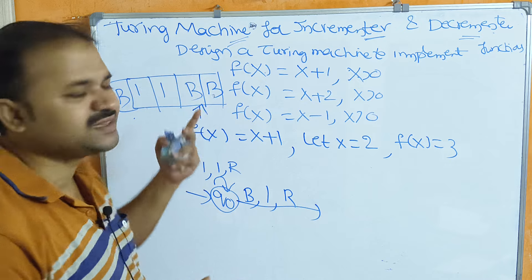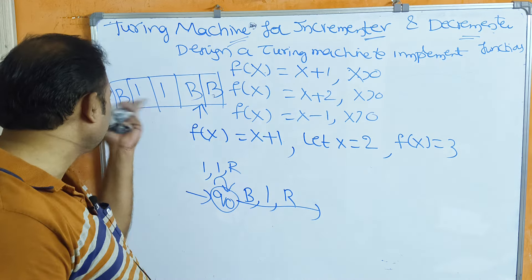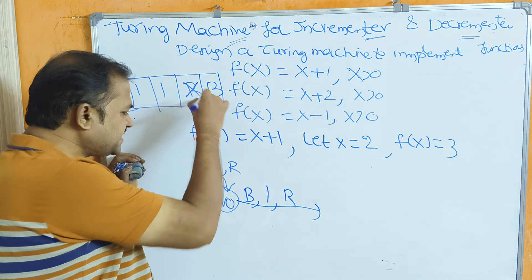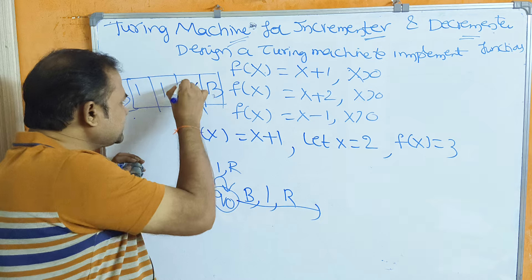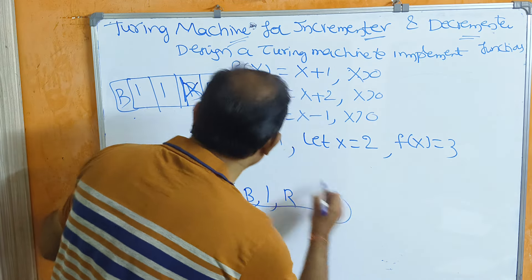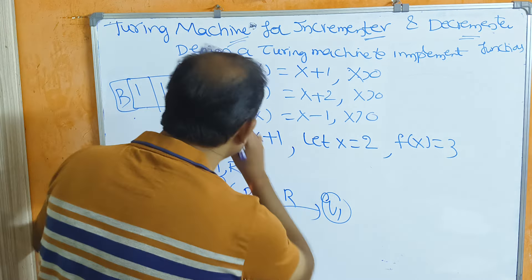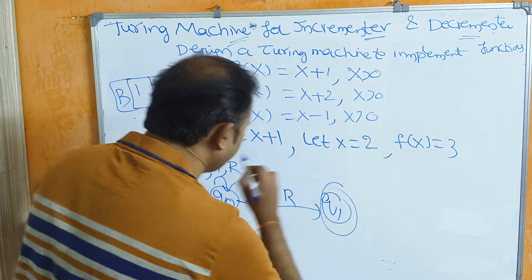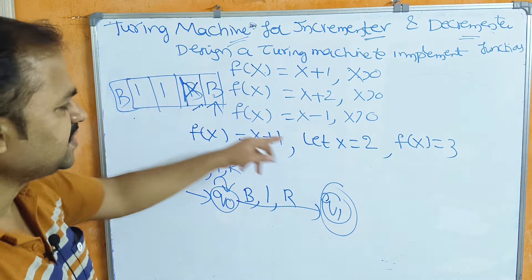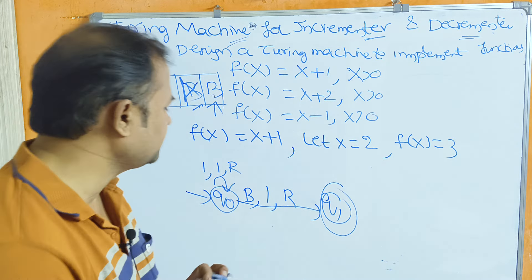Because the Turing machine tape is infinite, after the input string we can replace the blank symbol. So we replace the blank symbol and move to the right side, then replace the blank symbol again. We can stop the process now. If we have the output, we have three ones.